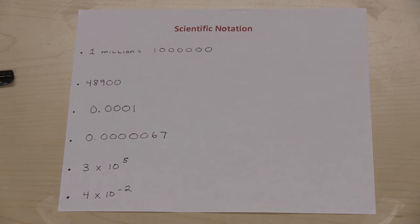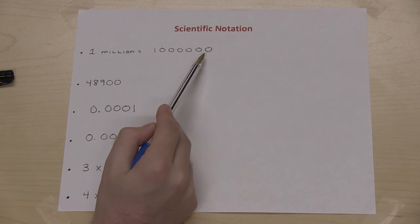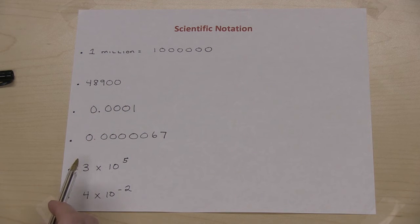For numbers that are really big or really small, we can use scientific notation. So let's take an example here. Suppose I have the number 1 million, so that's 1 followed by 6 zeros. I can rewrite that in scientific notation by doing the following.